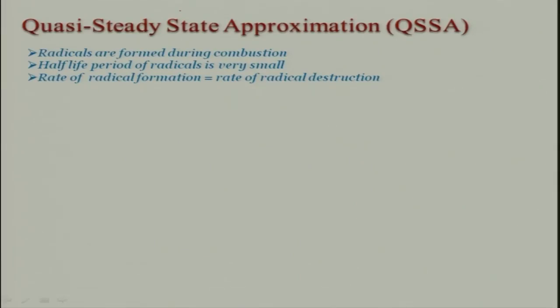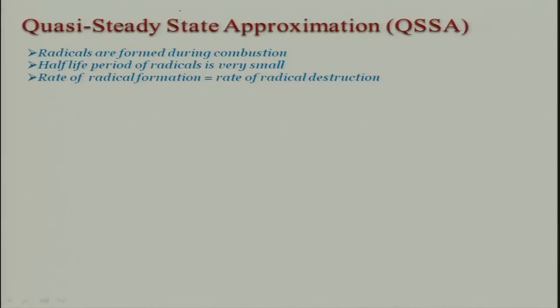In the quasi-steady-state approximation, what is assumed is that the species has reached a steady state. Radicals form during combustion, and the half-life of radicals is very very small compared to stable species. Therefore, I can say the rate of radical formation is equal to the rate of radical destruction — because in a certain time during that process the radical will be there, and after that it would not be there. It is like how from the scale of the Indus Valley civilization, our own lives are like a radical — we are here contributing and then go away, similarly for radicals.